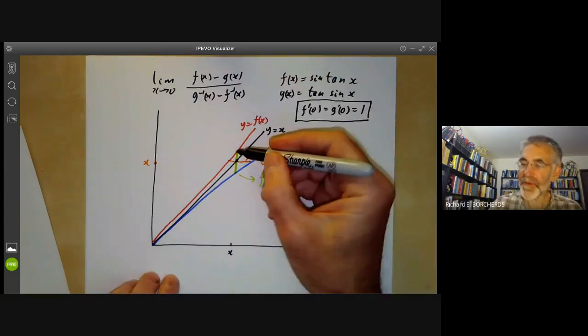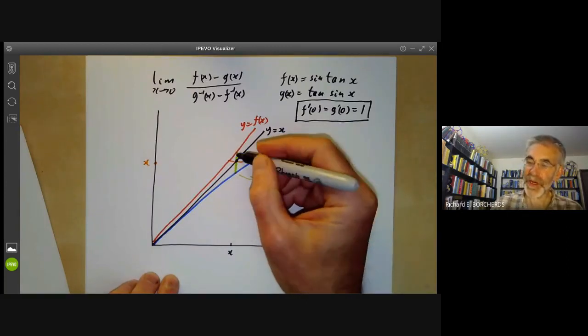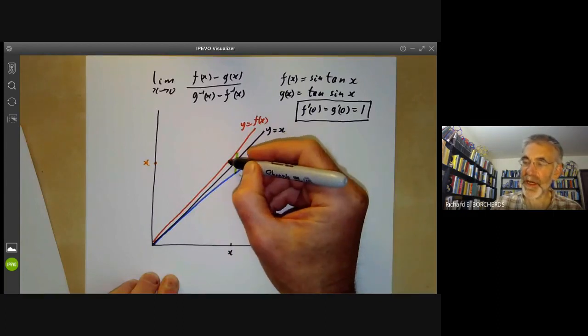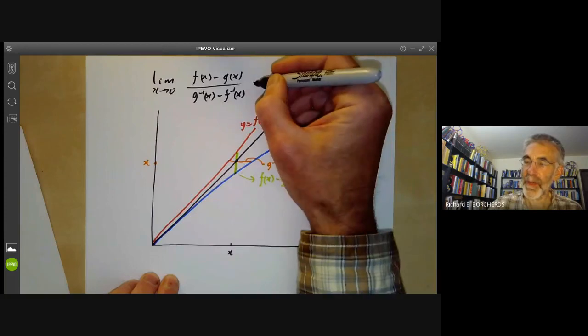So the limit we want to find out is the ratio of this line to this line. And you can see from geometry that if you're really close to the origin, then the ratio of this line to this line is just the slope of this line here, which is one.